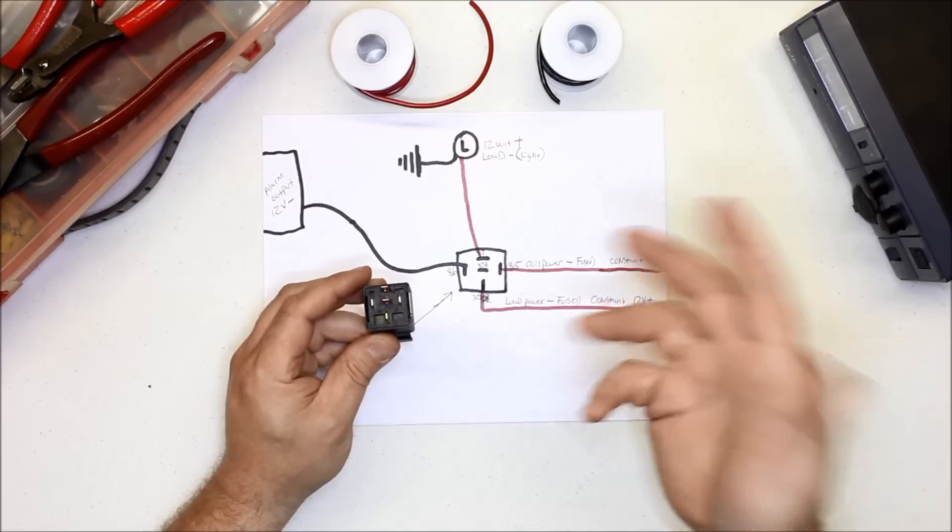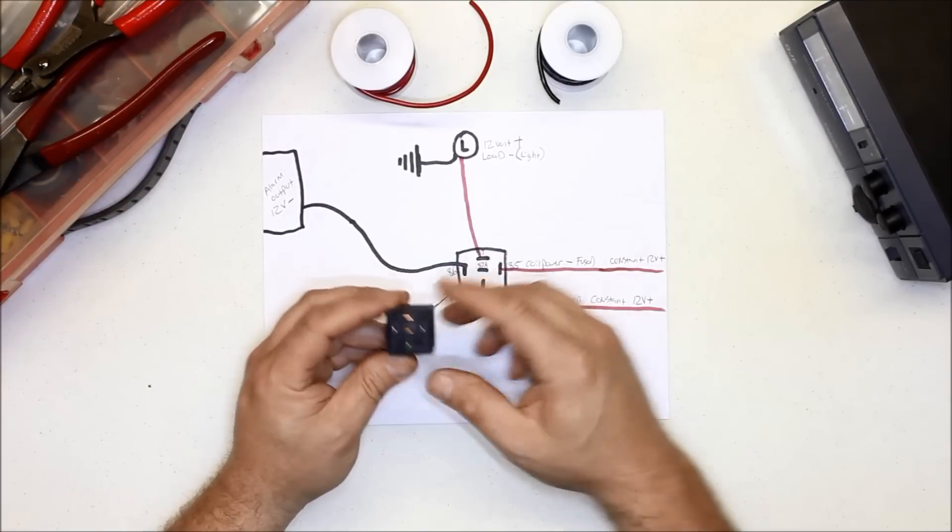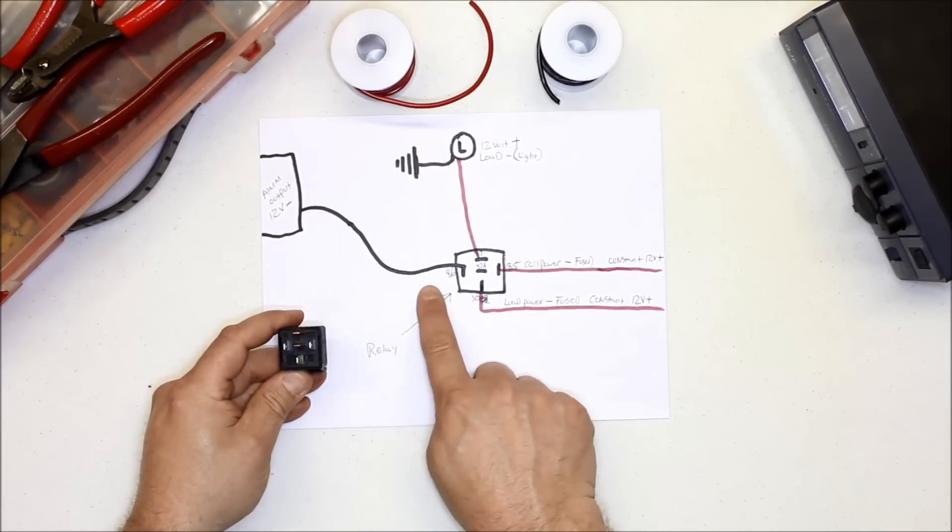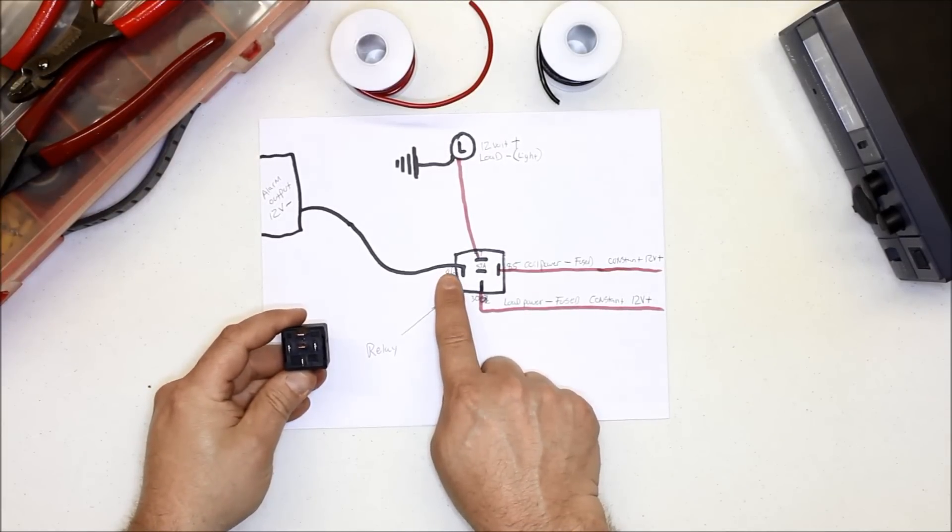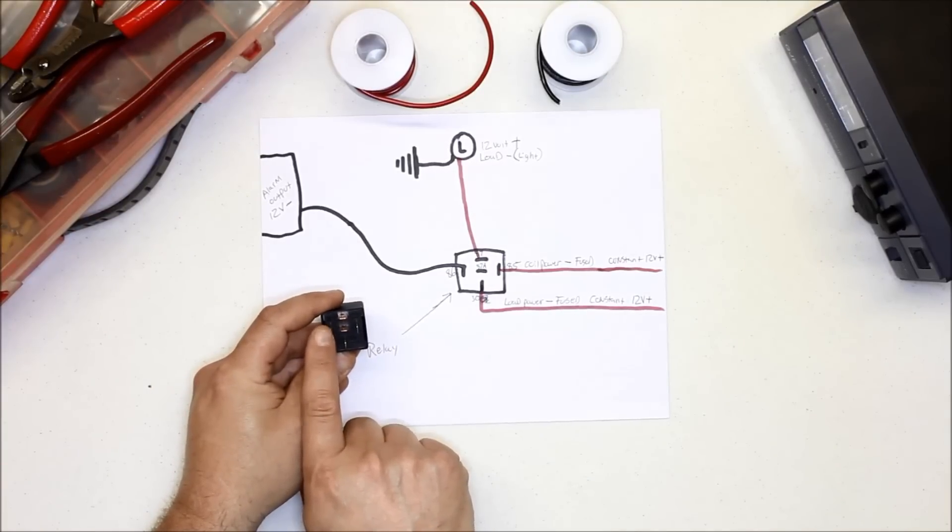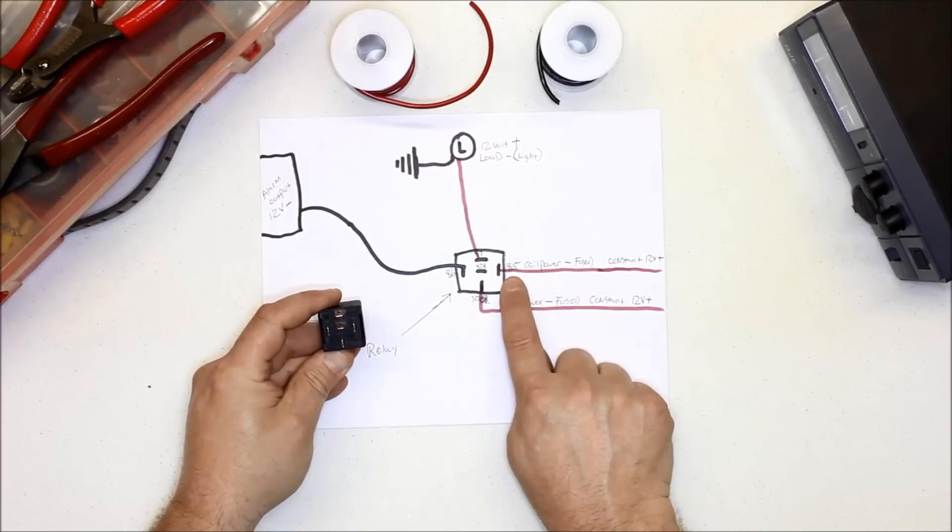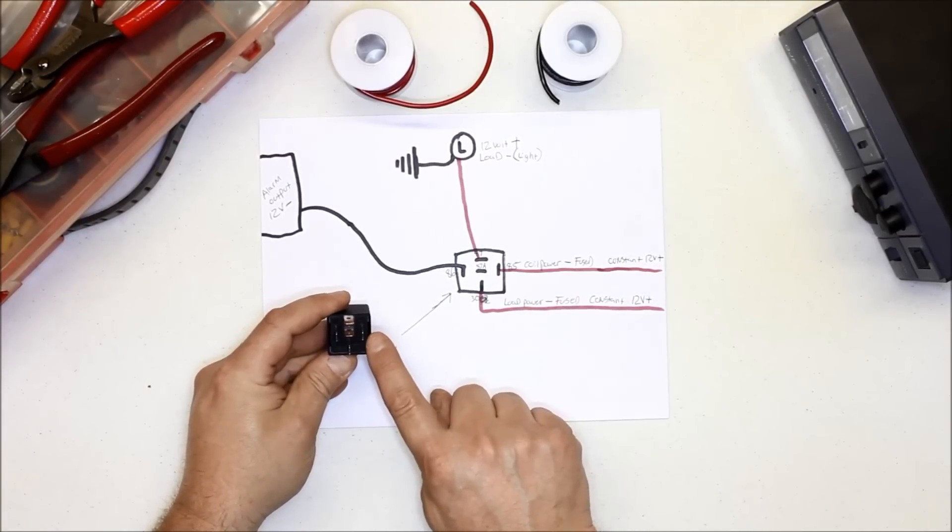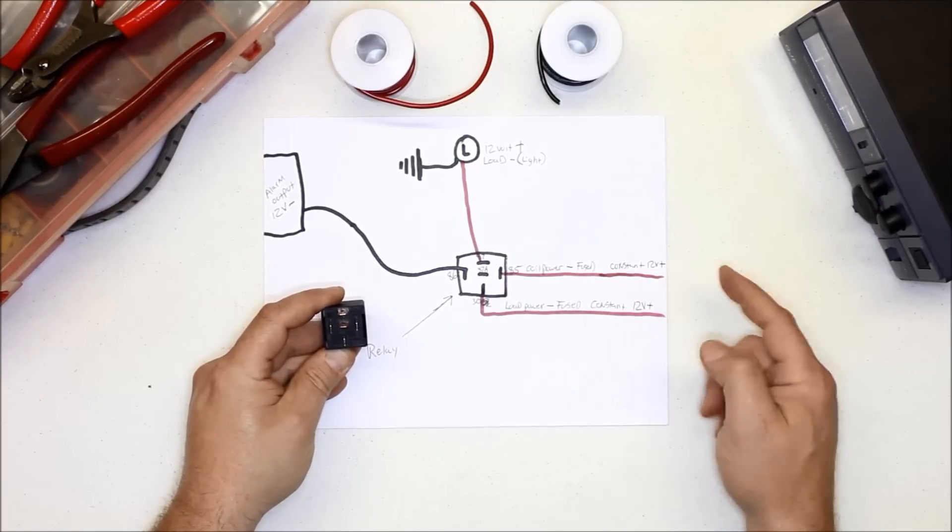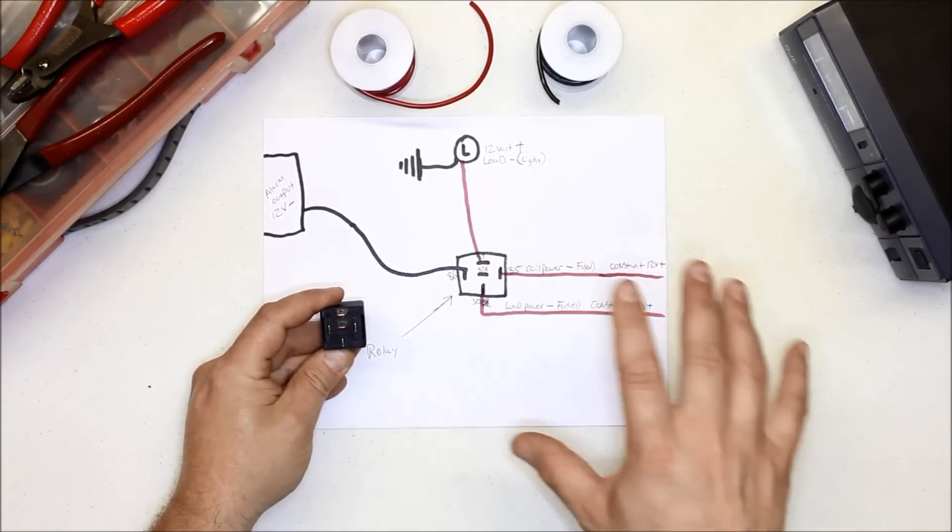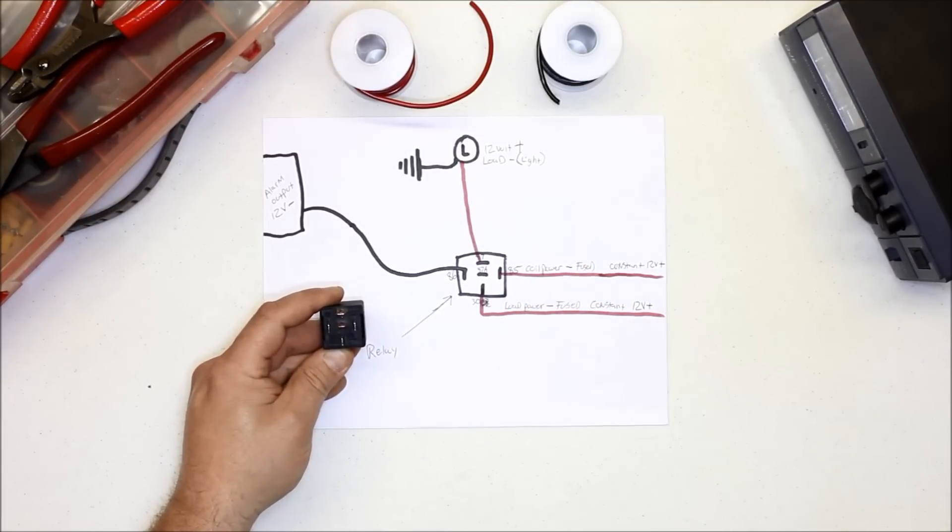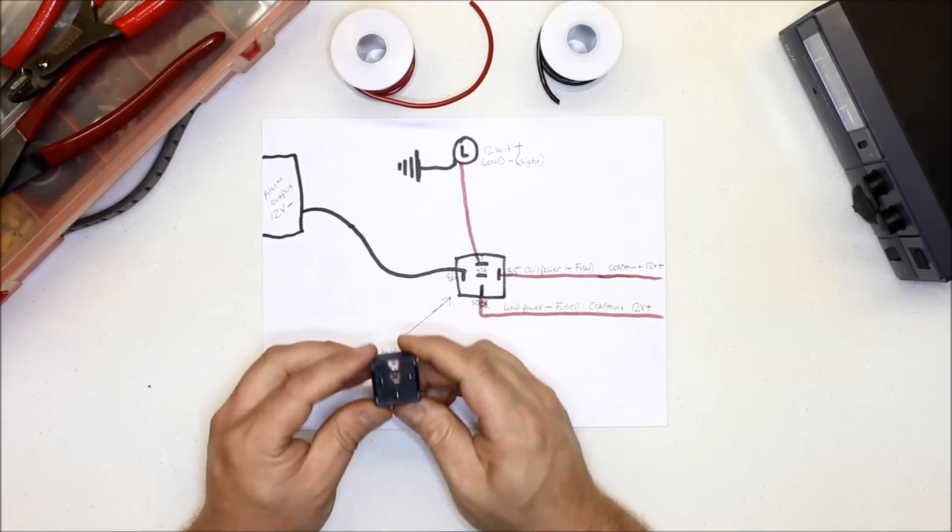You would take your negative output from the aftermarket box and go to one side of the coil. Then the other side of the coil, which is usually terminal 85 or 86—these could be either way, it doesn't matter—you need a constant 12 volt. In this example, you may wire a relay differently for, say, electric fans or something using a toggle switch. This is only one example of how to wire a relay, not all examples.